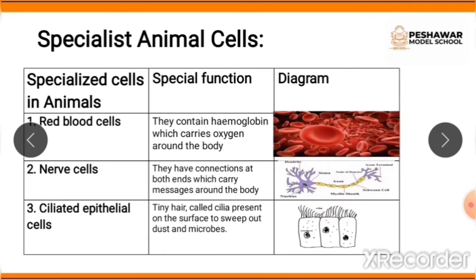The next specialized animal cell is nerve cells. Their structure is shown in the diagram. Nerve cells have connections at both ends which carry messages around the body. The third type is ciliated epithelial cells — 'ciliated' refers to the presence of tiny hair-like structures.